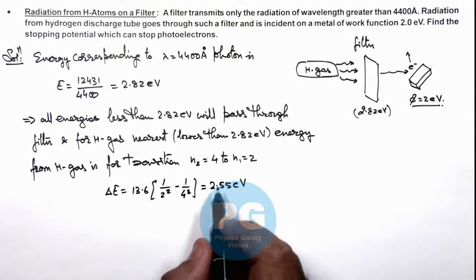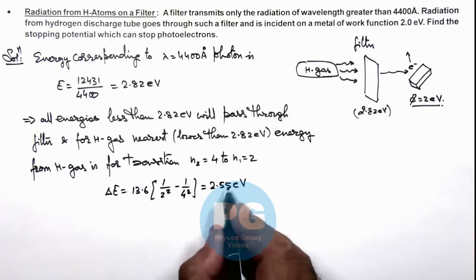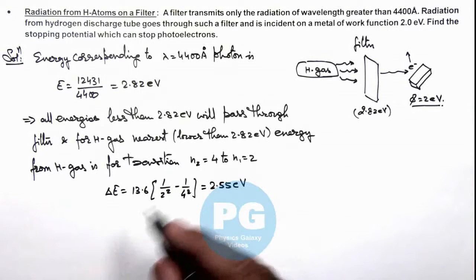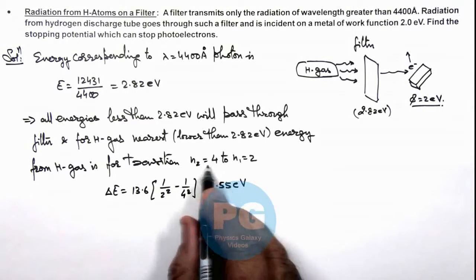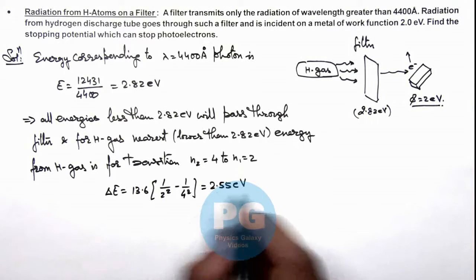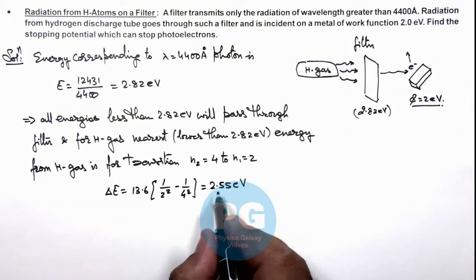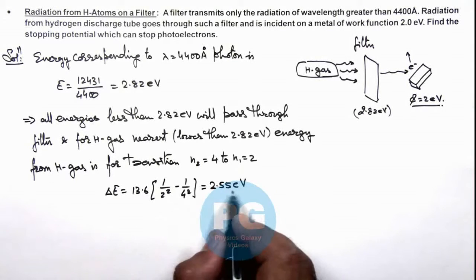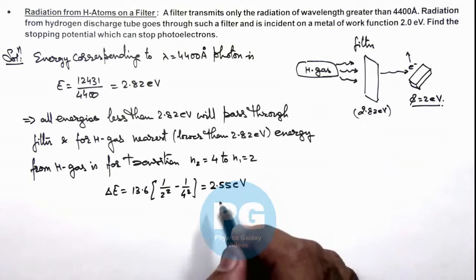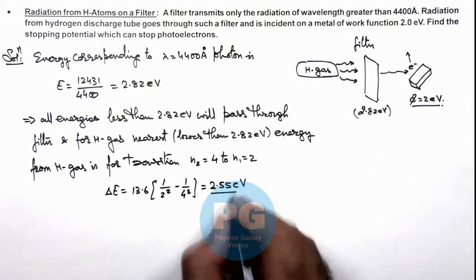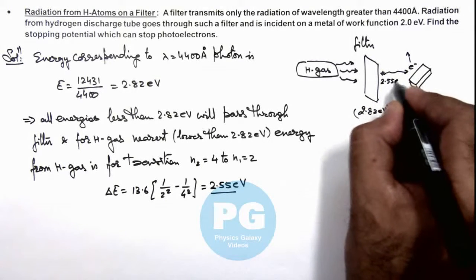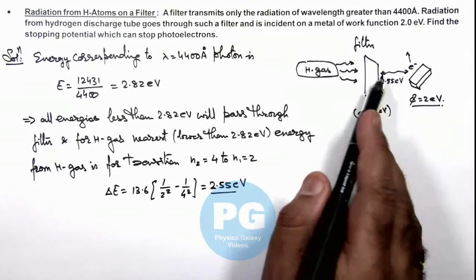I am able to handle it directly because I know all the energy differences we already studied in concept videos. So if you know about the energies of individual energy levels of hydrogen atom, we have explained in concept videos, you will immediately be able to map which energy difference is less than 2.82 and closest to it. That means this is the energy of the photon which will pass through, which is 2.55 electron volts.